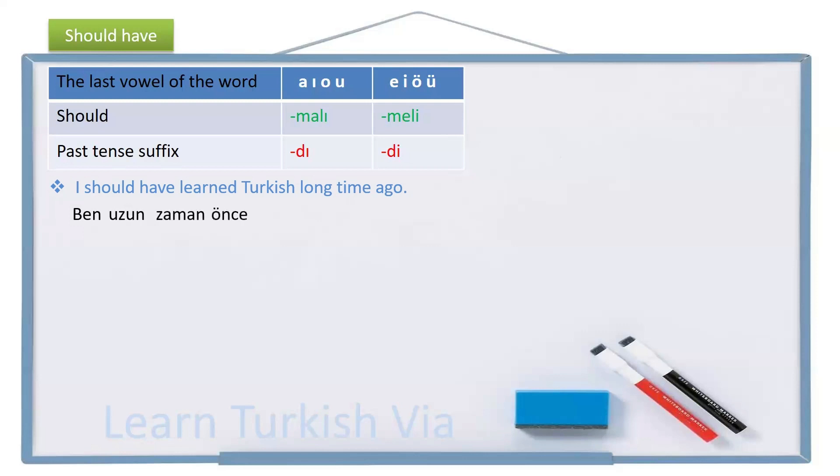The same. Turkish, Türkçe, learn, öğren, should learn, öğrenmeli, should have learn. I need to add past tense, simple past tense, -di.